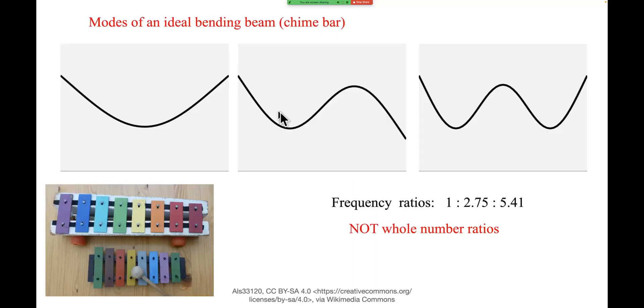Start by reiterating something from the previous talk. All these instruments, all structures can vibrate in many different ways. Each particular way is called a vibration mode and is associated with a particular resonance frequency.